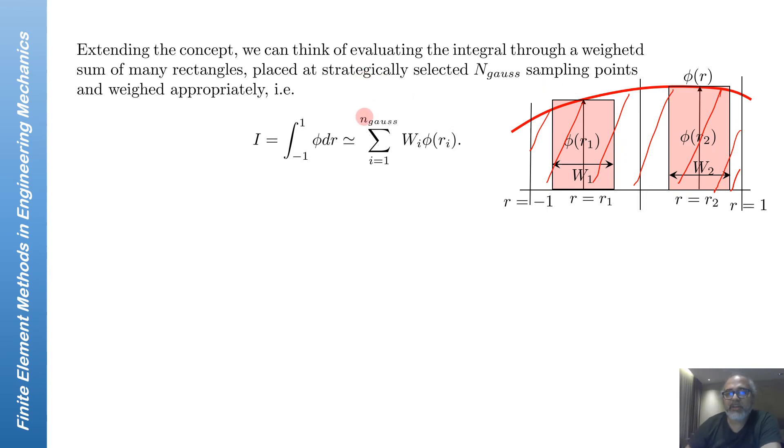We can do it for more than two as well. In fact, if we do it for n Gauss points, then there would be n sampling points Ri, and each of them will have a width or weight which is equal to Wi. I'll estimate the integral from minus 1 to 1 phi dR as a summation of Wi phi(Ri), which is basically the areas of these rectangles put together.